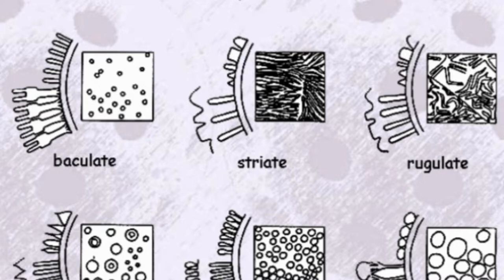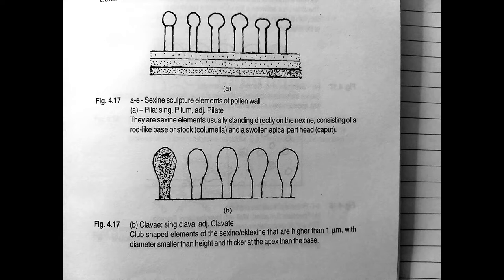This lecture brings you sections of the pollen wall illustrating the common types of sexine sculpture elements and sculpture patterns. We'll start with the sculpture elements of pollen wall. The first type is pilate. They are sexine elements usually standing directly on the nexine, consisting of a rod-like base or stalk called columella and a swollen apical part called the head or caput.